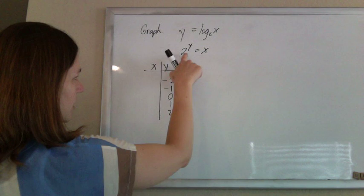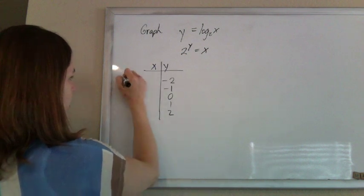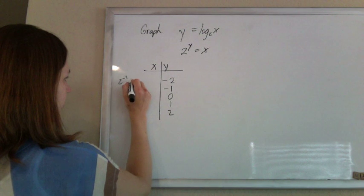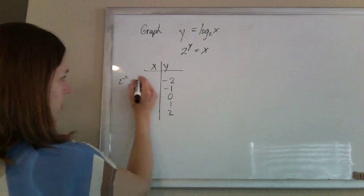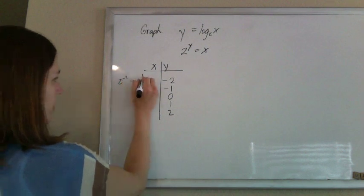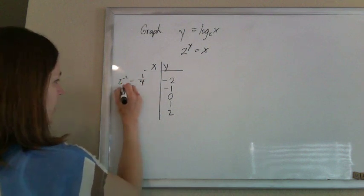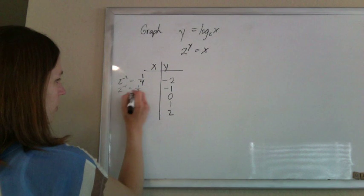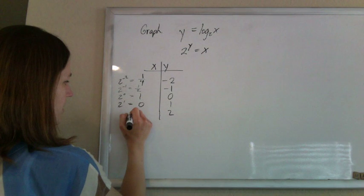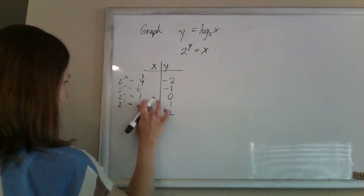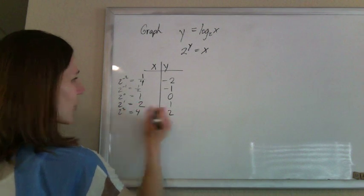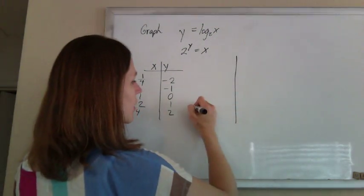So if I do that, 2 to the negative 2 power, 2 squared would be 4, so to the negative 2, it's 1 over 4. Just like 2 to the negative 1 is 1 over 2, 2 to the 0 is 1, 2 to the 1 is 2, and 2 squared is 4. So if you were to plot all these,